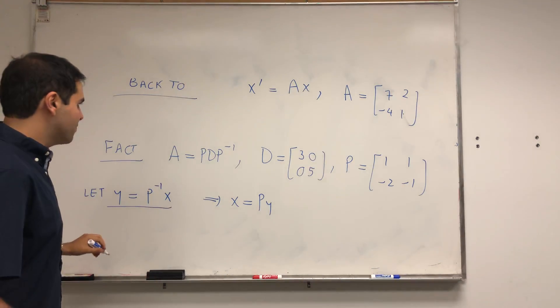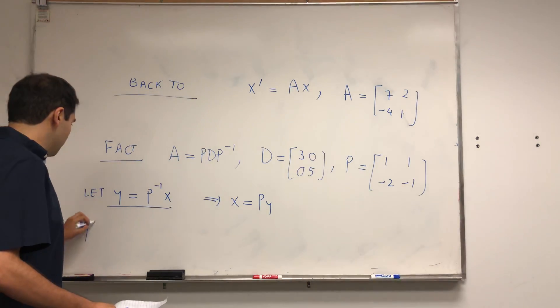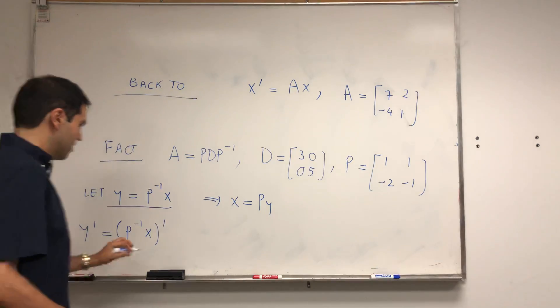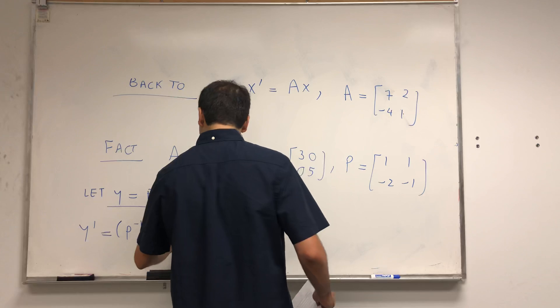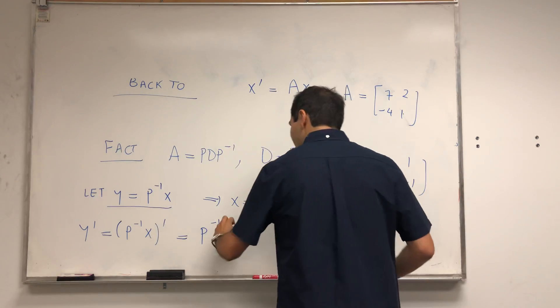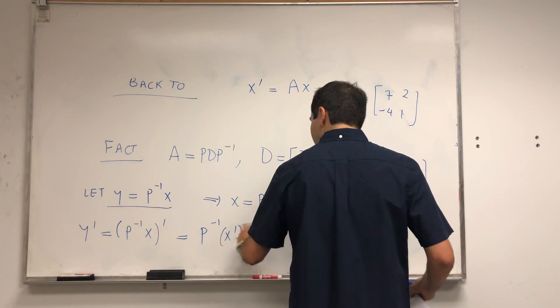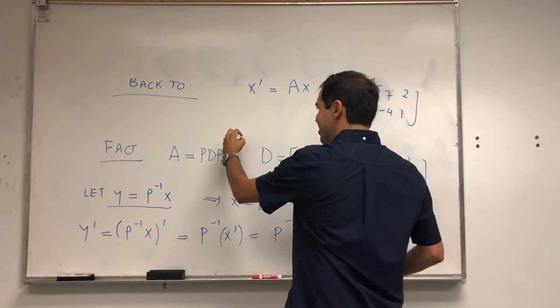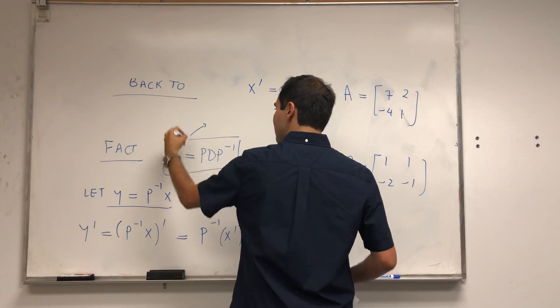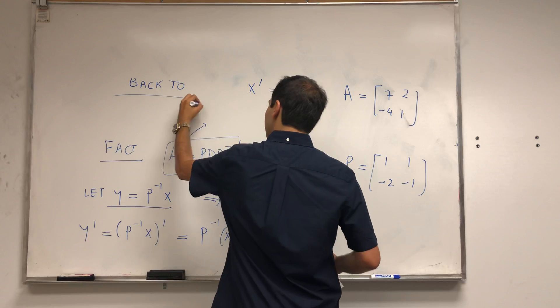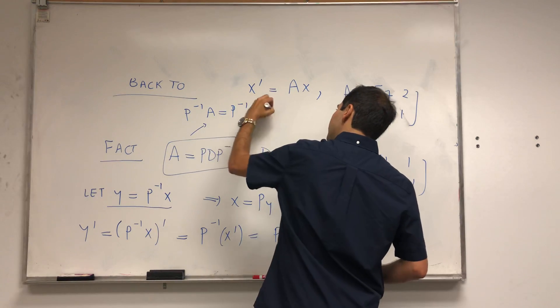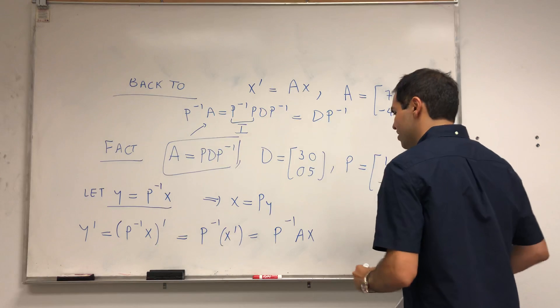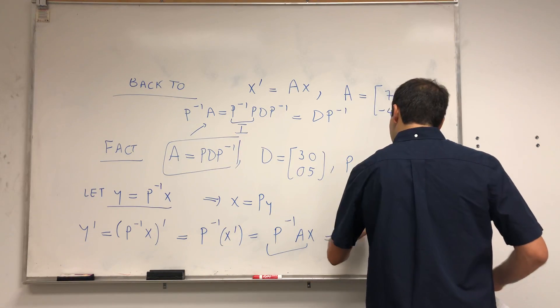Then you can rewrite this. Y prime becomes P inverse x prime. But P inverse is a constant in terms of matrices, so it becomes P inverse x prime. But x prime is just Ax. Now let's use this equation: if A is PDP inverse, then multiply to the left by P inverse and you get P inverse A is P inverse PDP inverse. This is the identity, so this becomes DP inverse.